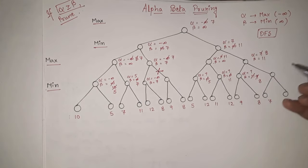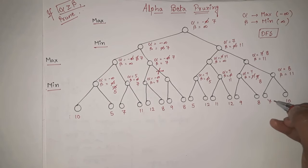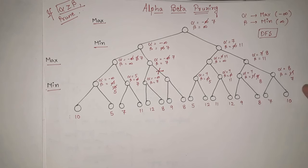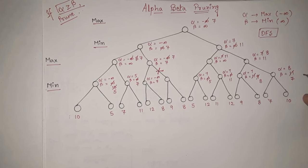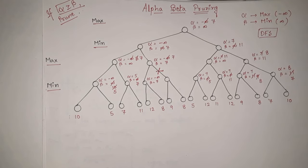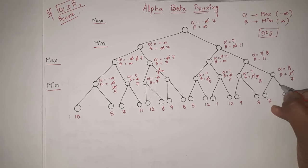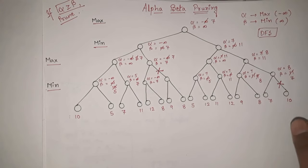After this, the value is carried forward: alpha equal to 8 and beta equal to 11. At leaf node 7, this is min, so beta is updated. Out of 7 and 11, the smaller is 7. Then out of 7 and 10, the smaller is 7, so it stays as is. Here again, if you see that alpha is greater than or equal to beta — 8 is greater than 7 — so there was no need to check further; we can simply prune it.